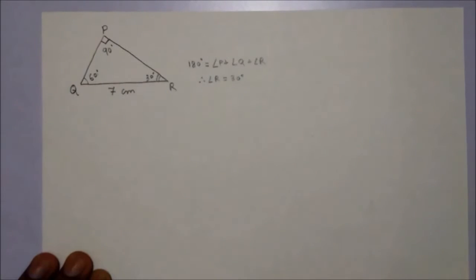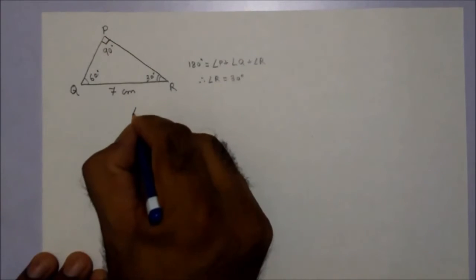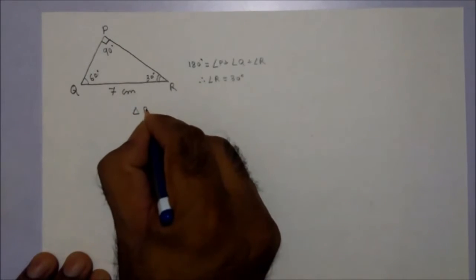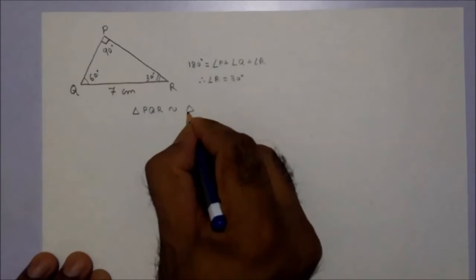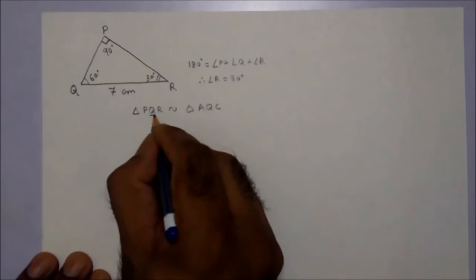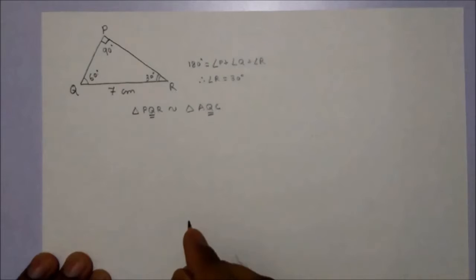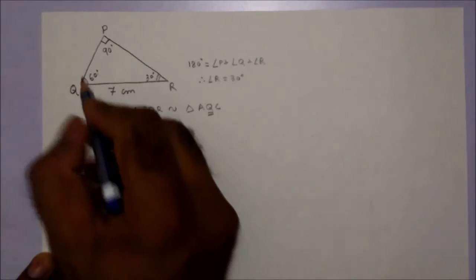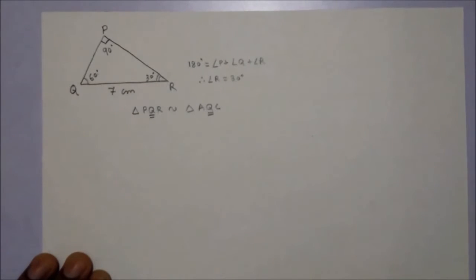Now we have to construct a similar triangle. Triangle PQR similar to triangle AQC. We can see here this Q element is common in both. Both the triangles have this element in common.